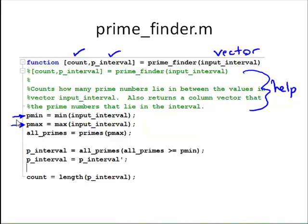And then what I did is, I'm using the primes function to return all prime numbers up to the input. So, this function will return all prime numbers up to the value p_max, and assign those to the variable all_primes. Then what I need to do is get rid of the elements that are below p_min.